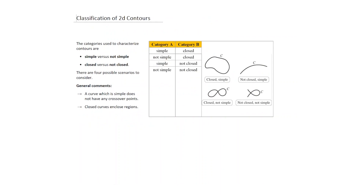Let's look at the classification of contours and regions, starting with 2D and moving to 3D. For contours in 2D, we characterize them as simple versus not simple, and closed versus not closed. Taking all possible combinations, there are four cases shown in a table: simple-closed, not simple-closed, simple-not closed, and not simple-not closed. A closed simple contour is the standard case used in problems so far. A closed not-simple contour has a crossover point, which is potentially problematic.